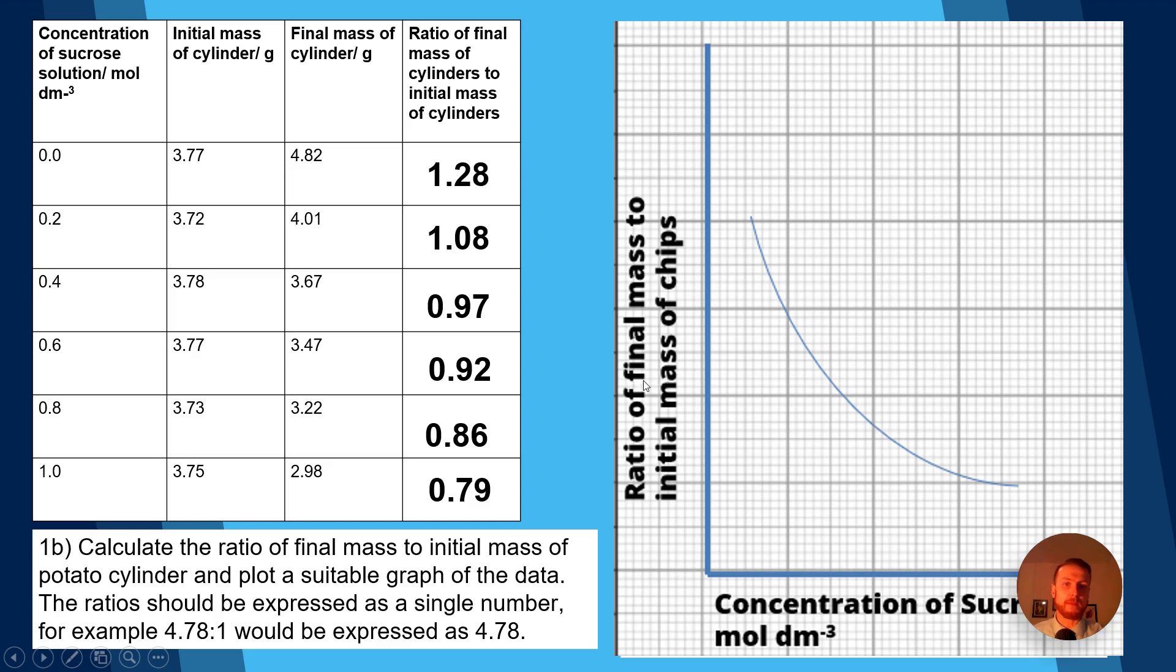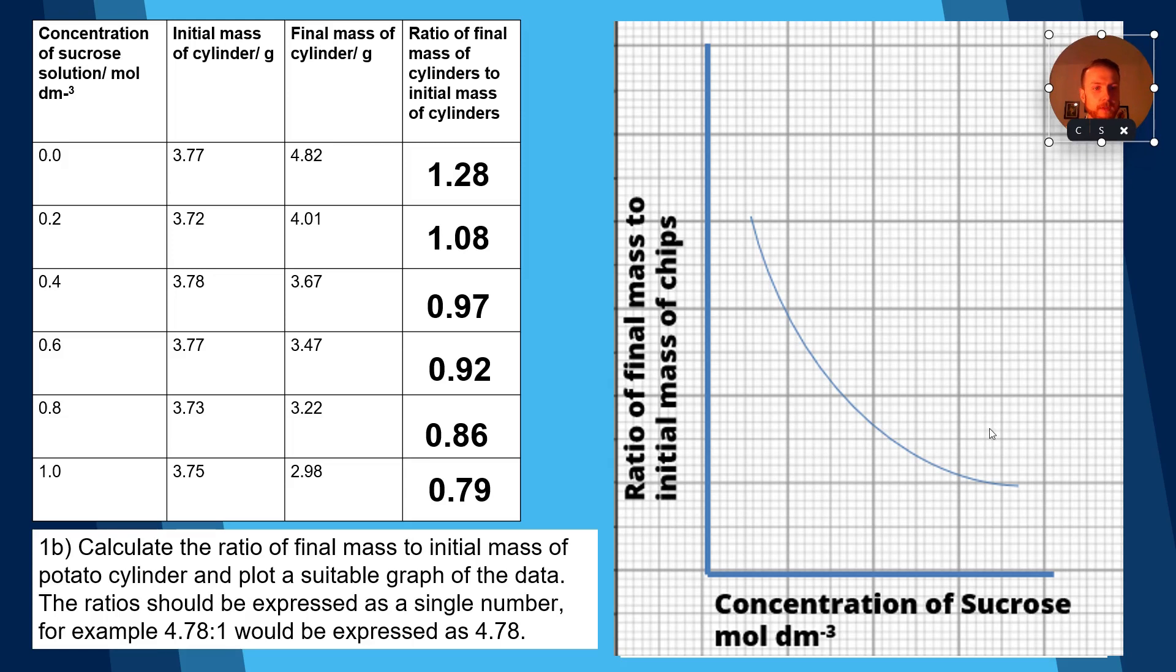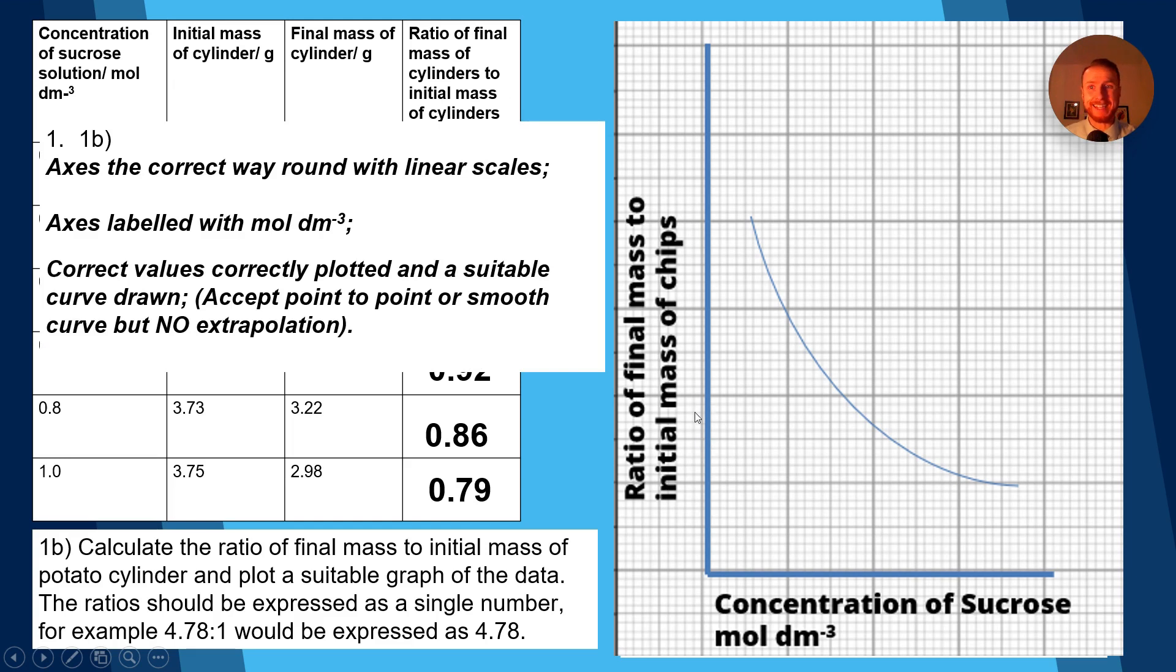And this is what I've got. We'd have the ratio of final mass to initial mass, which I've just taken from the end column. Concentration of sucrose in moles per decimeter cubed would go along the x-axis, which I've just taken from our independent variable on the left hand side. Now a little handy trick is to always put your independent variable on the x-axis and to put your dependent variable, the thing you're measuring, on the y-axis.